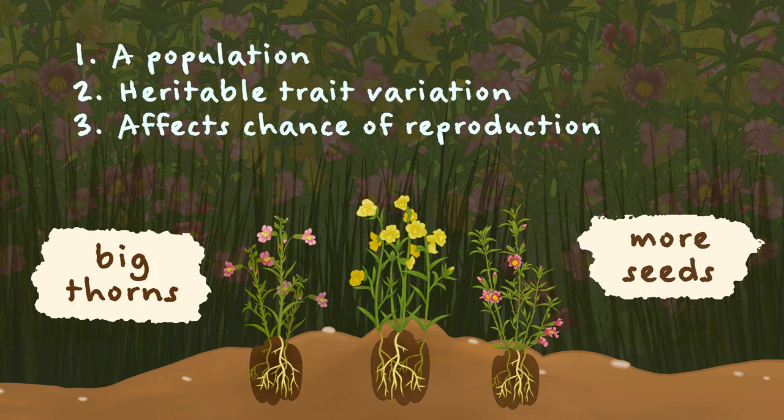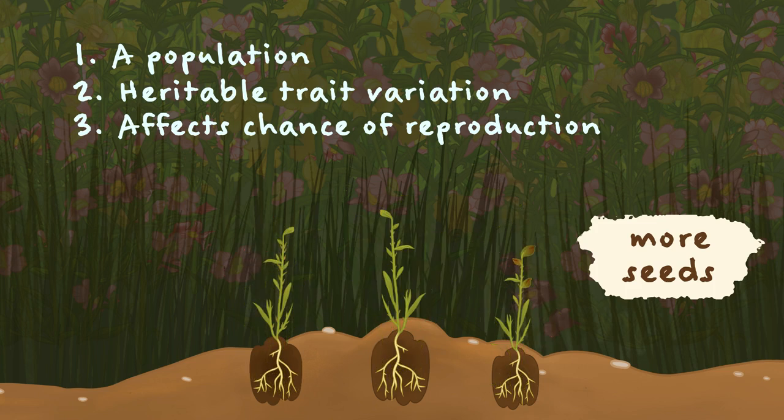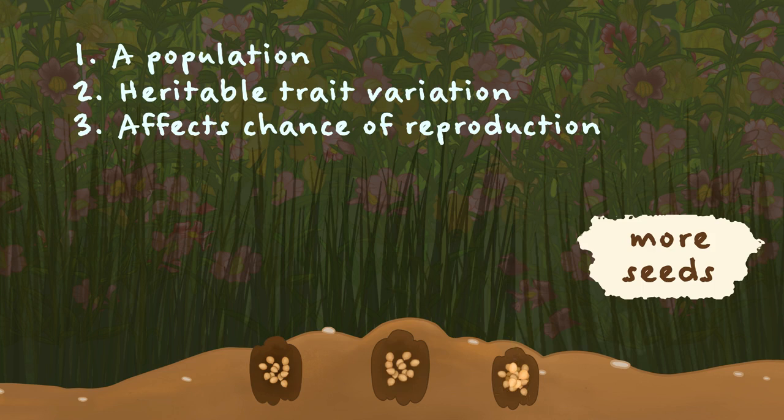The third thing you need is for some individuals to have a trait difference that affects their chances of reproducing. Since seeds are literally how plants reproduce, the more seeds trait fits the bill. On average, plants with this trait pass their genes and the resulting traits to more offspring.